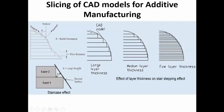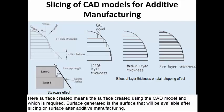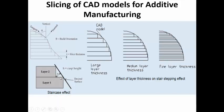There is going to be a difference, and the maximum distance that is present between the surface created and the surface required will be called the cusp height. This cusp height is dependent on the slice thickness.